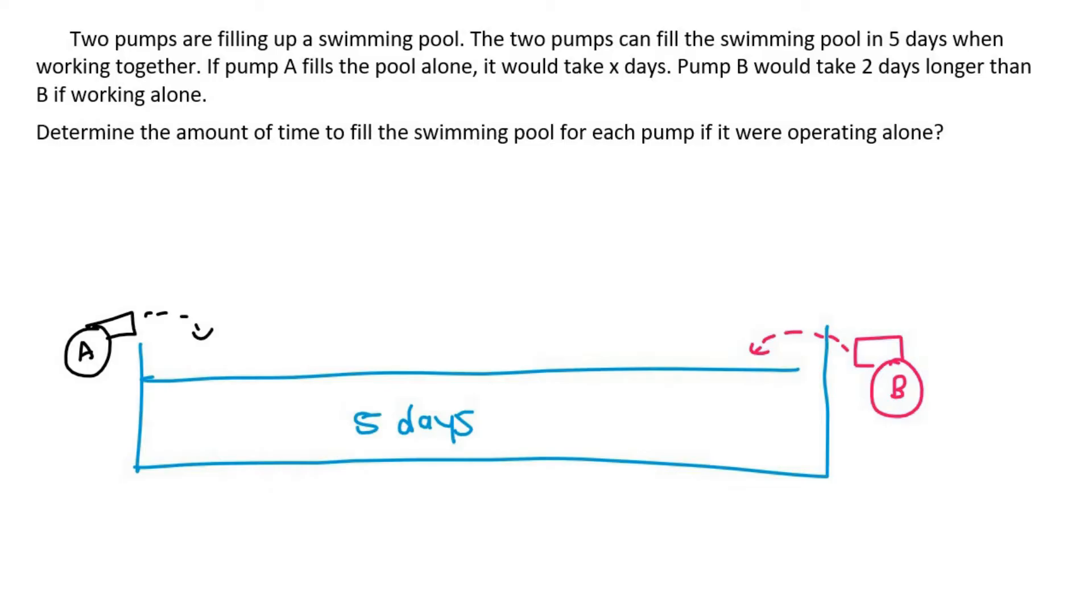If pump A fills up the pool alone, it would take X days. Now, do you think X is going to be more than five or less than five? Well, well done if you said more. Because pump A and pump B can fill up this pool in five days. Now, if pump A is working by itself, it would obviously take a little bit longer. And then it also tells us that pump B would take two days longer than B, if working alone. For example, if pump A can do six days by itself, then pump B does eight days.